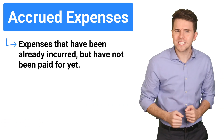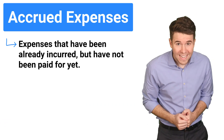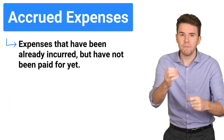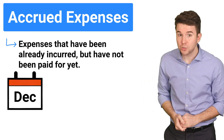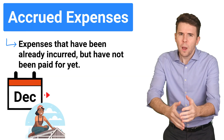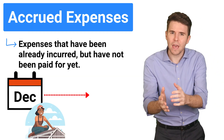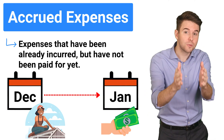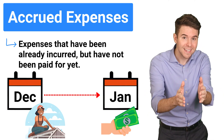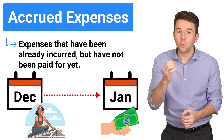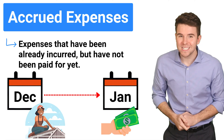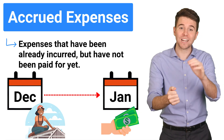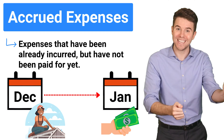Accrued expenses are costs that you have already incurred, but haven't paid for yet. For example, if you hire a contractor to start right away, but don't pay them until the job is done next year, you could have an accrued expense. In accrual accounting, we record expenses when they happen, which may be before we actually pay in cash.